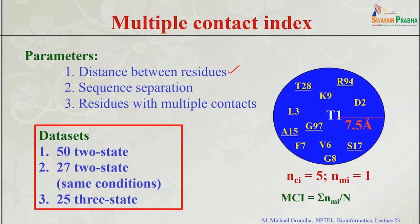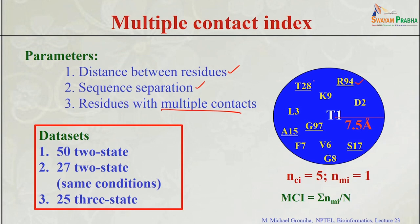Here they take the distance between residues already used in previous methods — contact order, long-range order — and sequence separation. Now, in addition to those, we add one more feature: the number of residues with multiple contacts. For example, if residue T1 forms 5 long-range contacts, then NCI equals 5, and we can define NMI equal to 1 if it is more than 4 or 5 (any cutoff). MCI is then calculated as sigma NMI divided by N for all proteins.